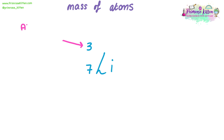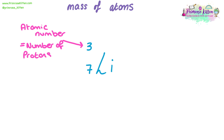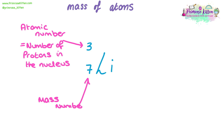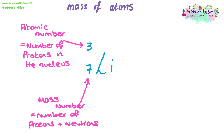If we start by looking at the smaller of the two numbers, this is referred to as the atomic number. The atomic number is the number of protons that an atom of that element would have within its nucleus. Because all atoms are neutral in charge, this is also the same as the number of electrons that atom has. The larger of the two numbers is referred to as the mass number. The mass number represents the number of protons and neutrons added together in the nucleus. It makes sense that the mass number only includes protons and neutrons because electrons have such a tiny mass they don't contribute to the mass of the atom.